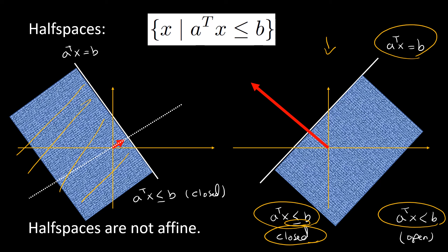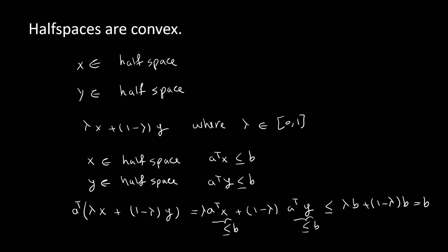Similarly, all points on the opposite side of the direction of a form a closed half space on the other side. To see more examples of hyperplanes, refer to videos of exercises 2.5, 2.6, and 2.7 from the Convex Optimization book — links will be in the description below. Another fact: half spaces are not affine sets, because we cannot write them as the solution set of a system of linear equations — we have inequalities, not equations.